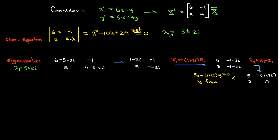y is going to be a free variable, and then I'll have 5x minus the complex number 1 plus 2i times y equals 0. Since y is free, I'm just going to choose y to be 5, which tells me that x is 1 plus 2i. So I get my first eigenvector with components 1 plus 2i and 5.